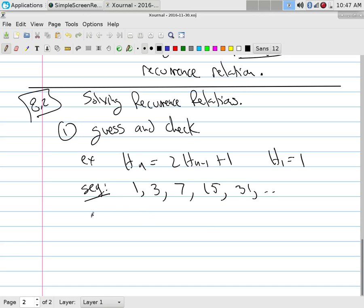I know it's the doubling sequence, so this is just one below the doubling sequence. So I just go ahead and guess that h_n is equal to 2^n minus 1.